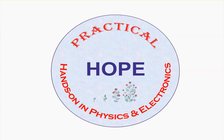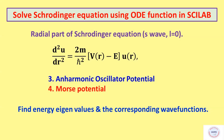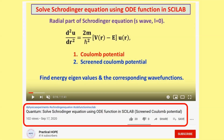Hello and welcome to the next video of our virtual lab practical. In this video we will solve the Schrödinger equation for different potentials using the ODE function in Scilab. We are going to find the energy eigenvalues and the corresponding wave functions. Before continuing, I suggest you watch my previous video on how to solve the Schrödinger equation using the ODE function in Scilab for the Screened Coulomb potential. The present video is a sequel to that, and the link has been provided in the description box.